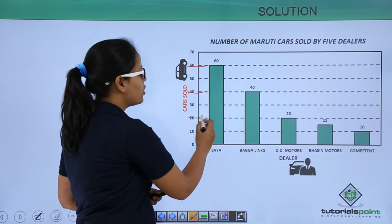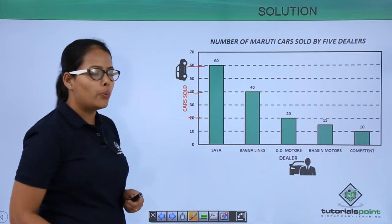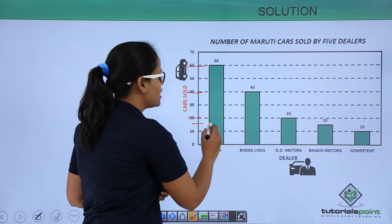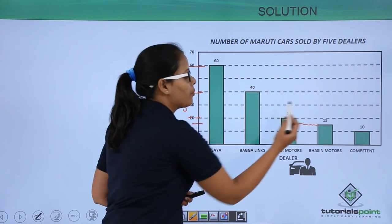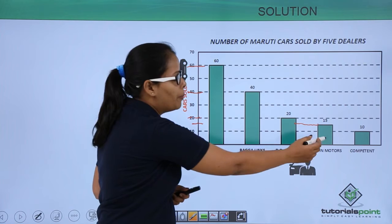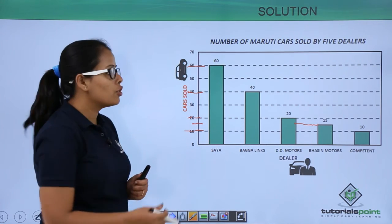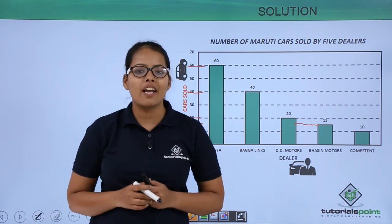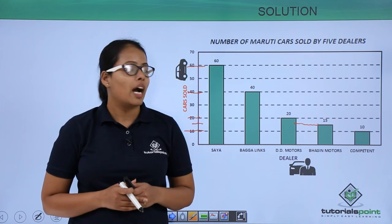DD Motors is at 20, so the bar level is on 20. Basin Motors is 15, so it lies somewhere in between. Competent's level is lying on 10. So this is the bar graph for the five dealers who sold their cars in a month.